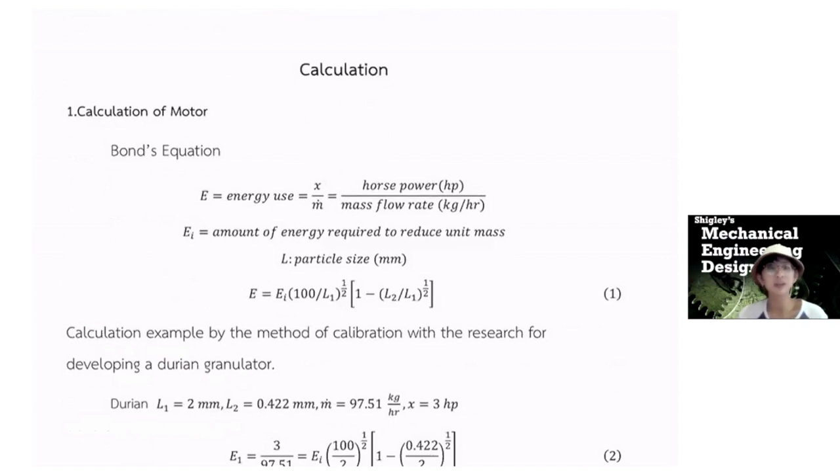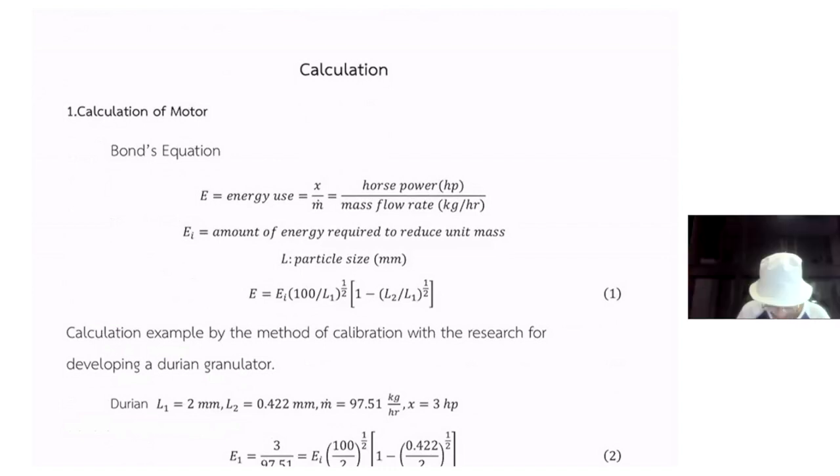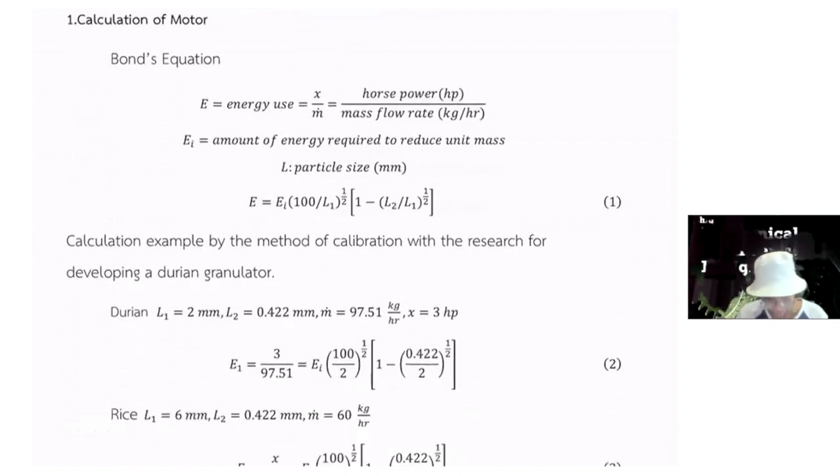And this is the calculation of the model. We use the bond equation. E is the energy, dual is the horsepower divided by mass forward. And the E also equal to EI 100 divided by L1. So the L1 is the length of input material and L2 is the output. M dot is mass forward. X is horsepower.